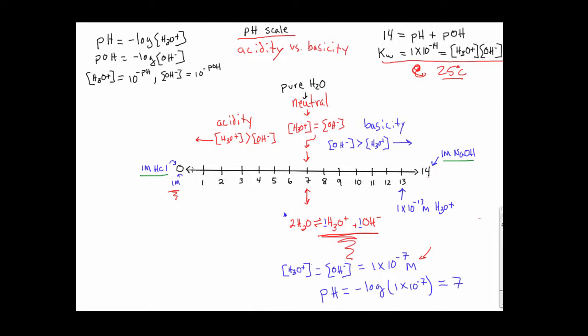Because this is logarithmic, what this means is that there is a 10-fold difference in H3O plus between any of the units. So at pH 0, we're starting with a 1 molar solution of some kind of strong acid. And when we move to a pH of 1,